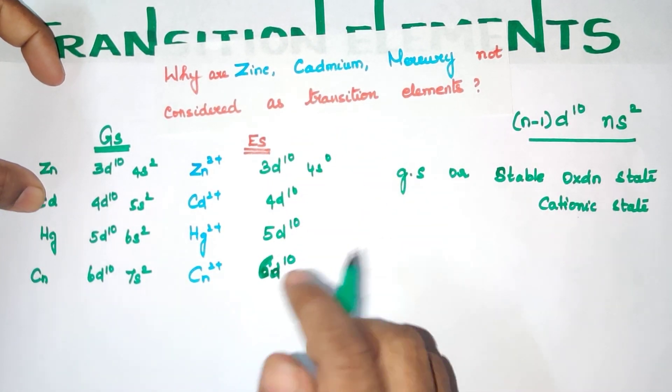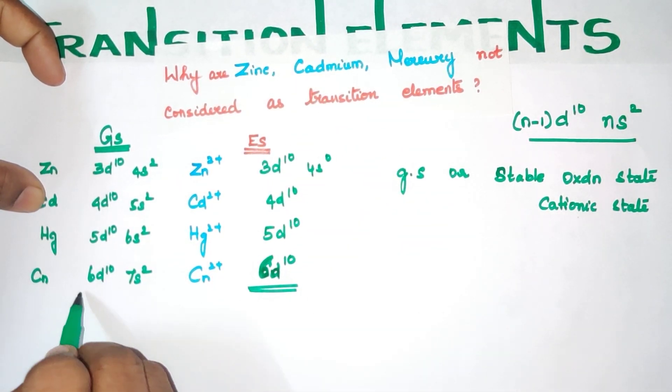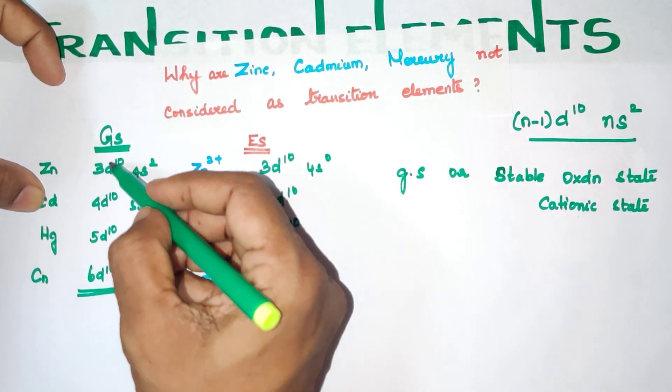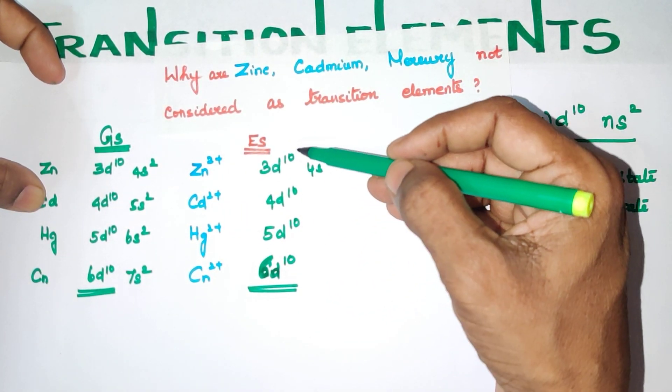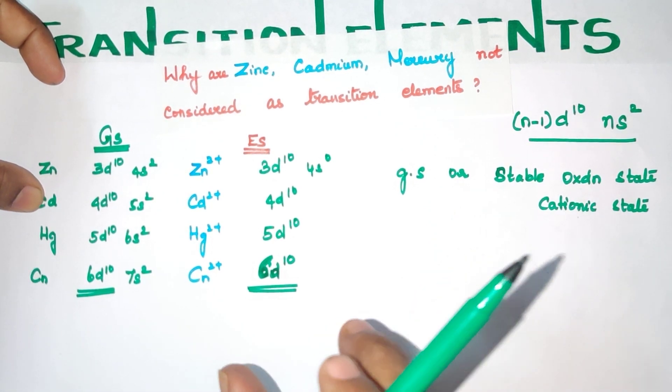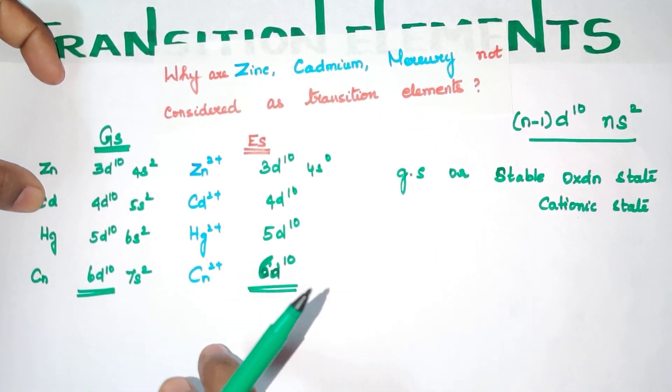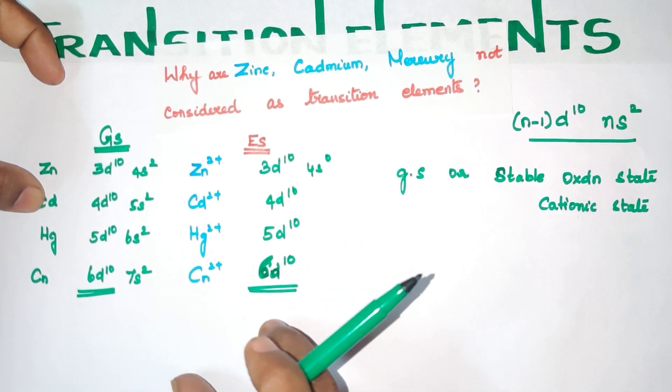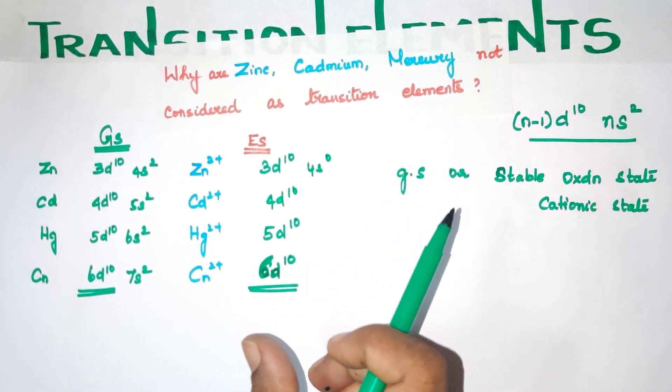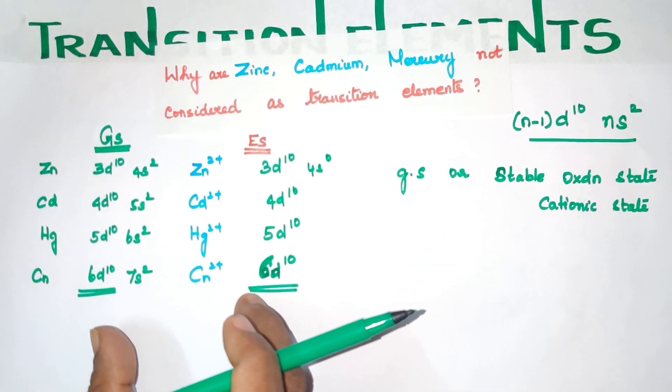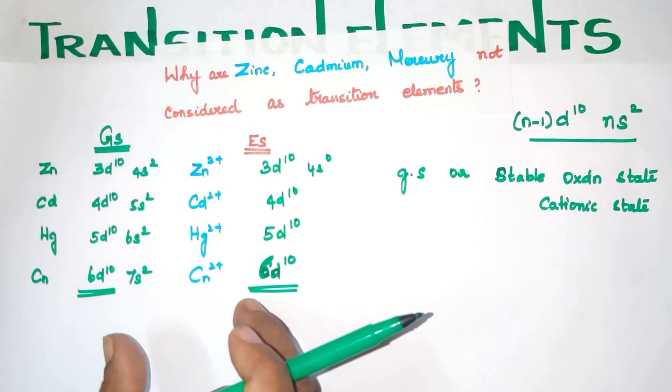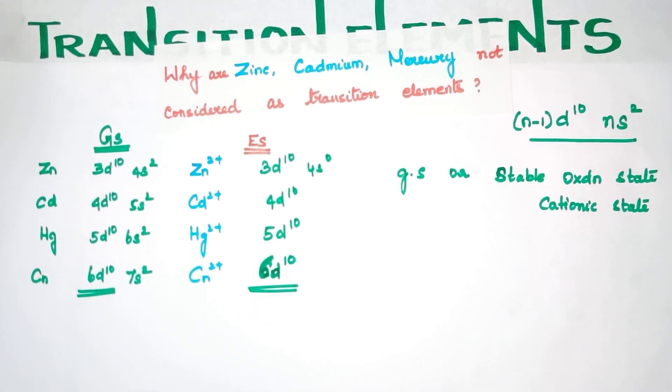So this we will see the d orbital - ground state completely filled and excited state completely filled. So these elements do not follow the definition of transition elements as per the IUPAC. Therefore these metals or these elements are not considered as transition elements.